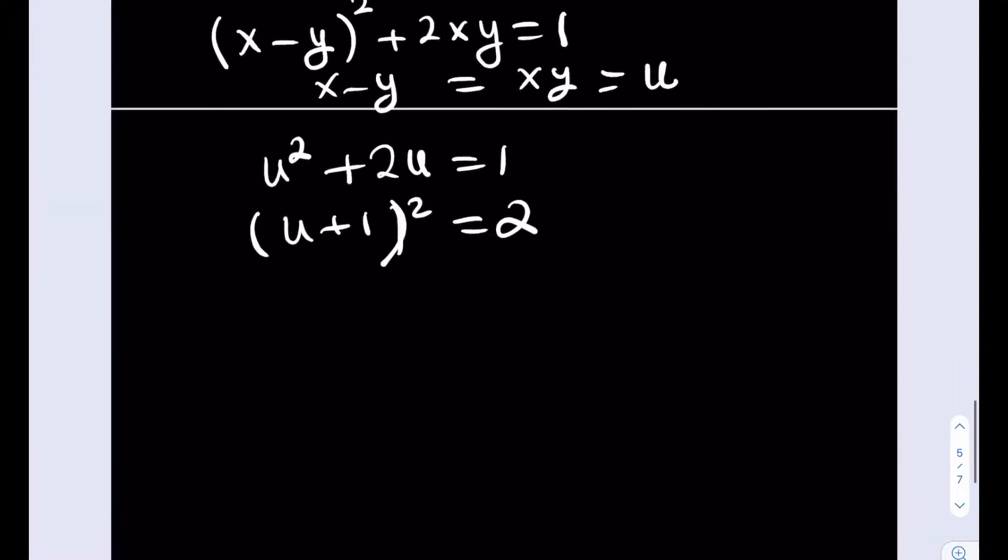And we're going to be getting two solutions from here. u plus 1 is going to equal plus minus root 2, which means that u equals negative 1 plus minus root 2. Awesome.